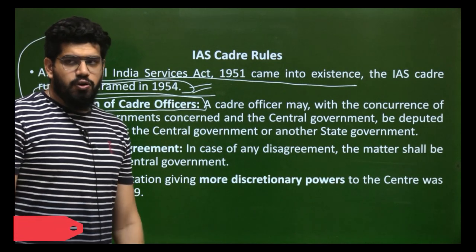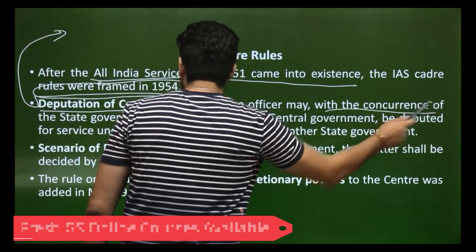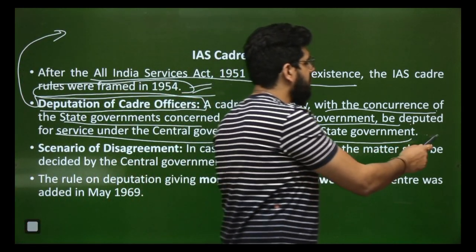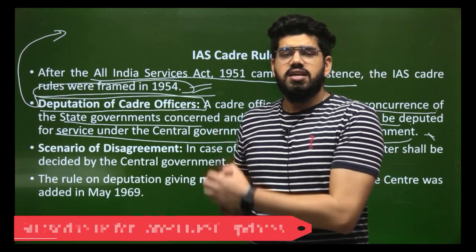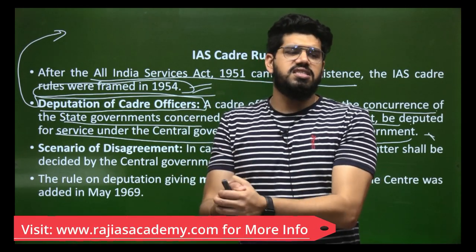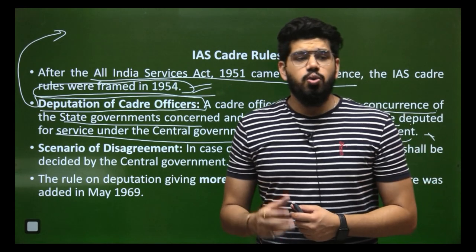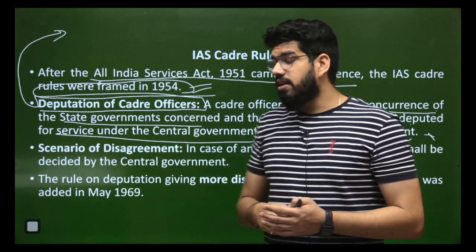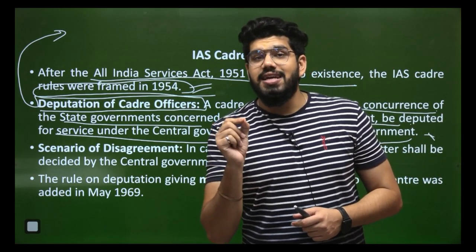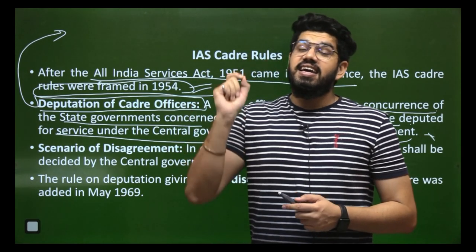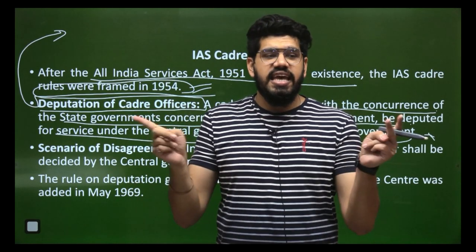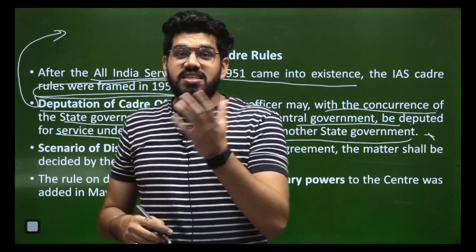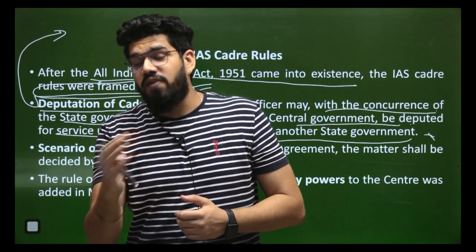When deputation is to be done, the cadre officer may be deputed to service under the central government or state government with the concurrence of both the state government and the central government. You cannot recall an IAS officer without the concurrence of both sides. However, if there is a disagreement between the state and the centre, the decision of the centre shall supersede that of the state, giving the centre an upper hand regarding deputation of state IAS officers.